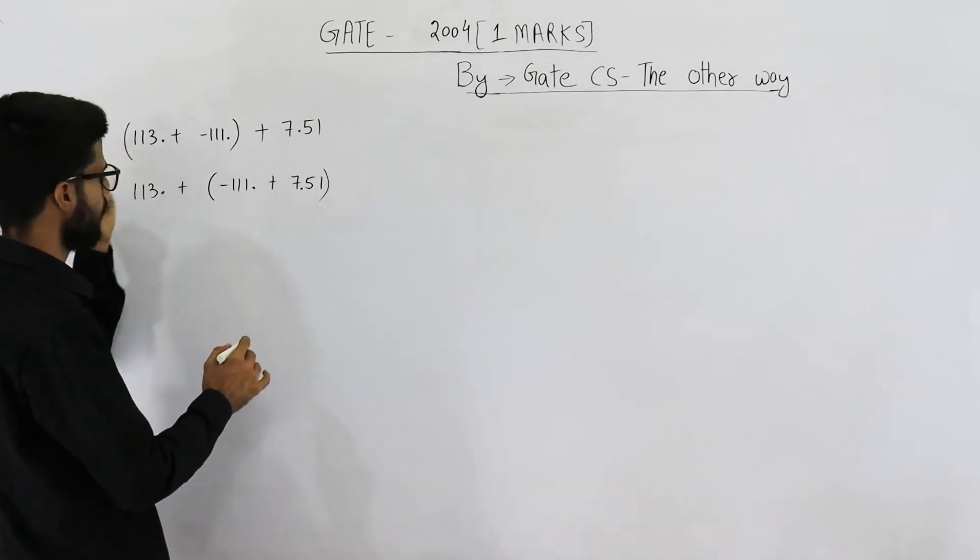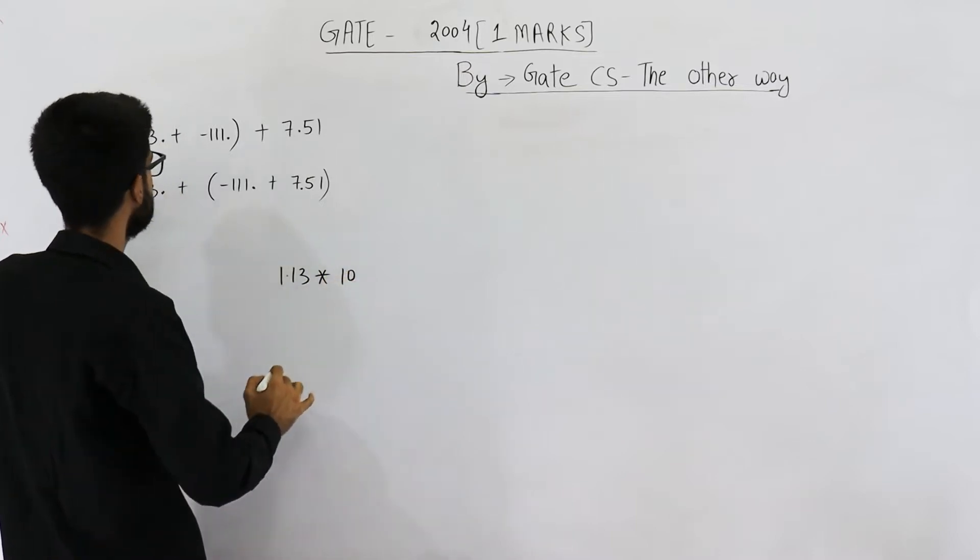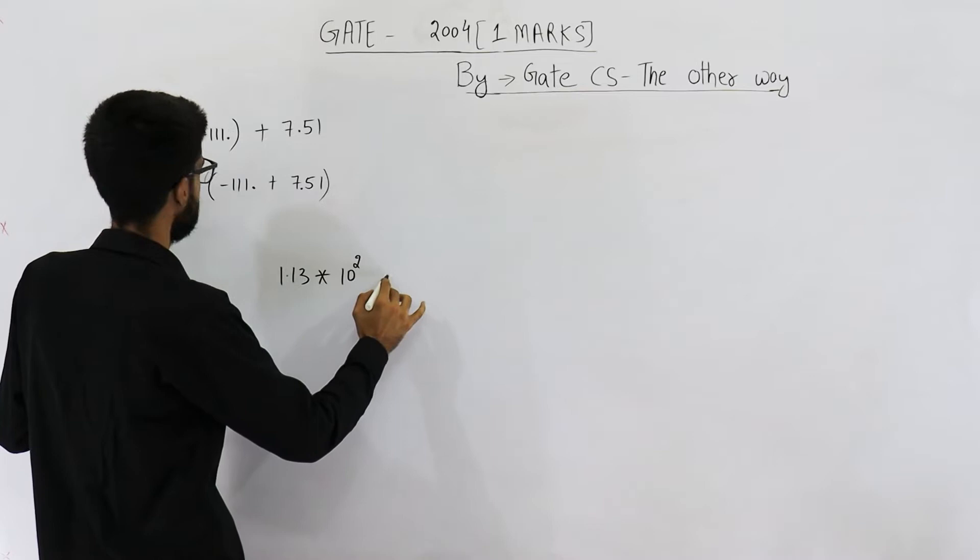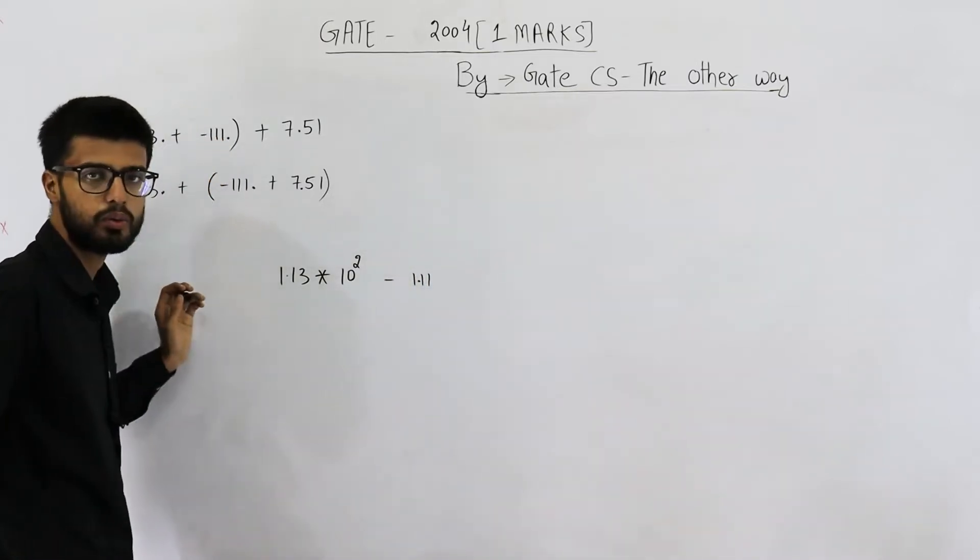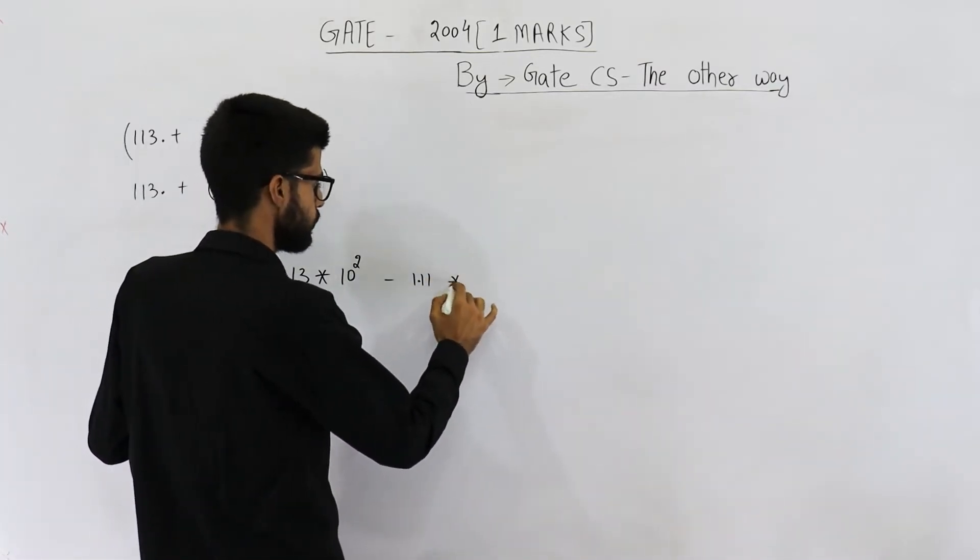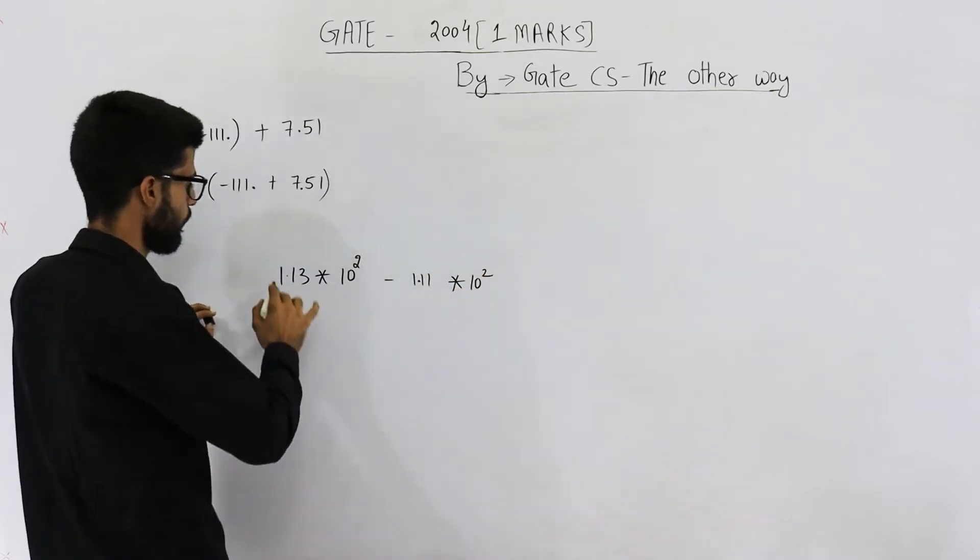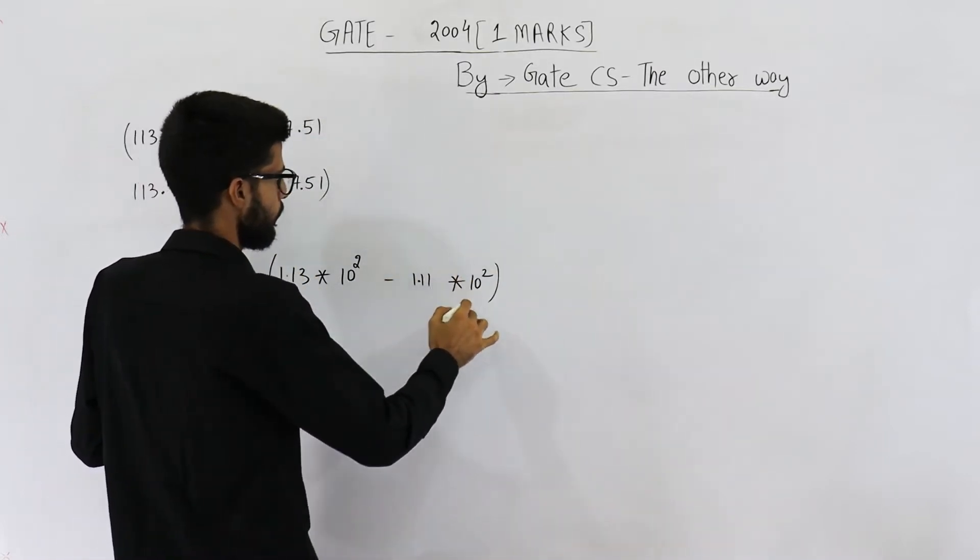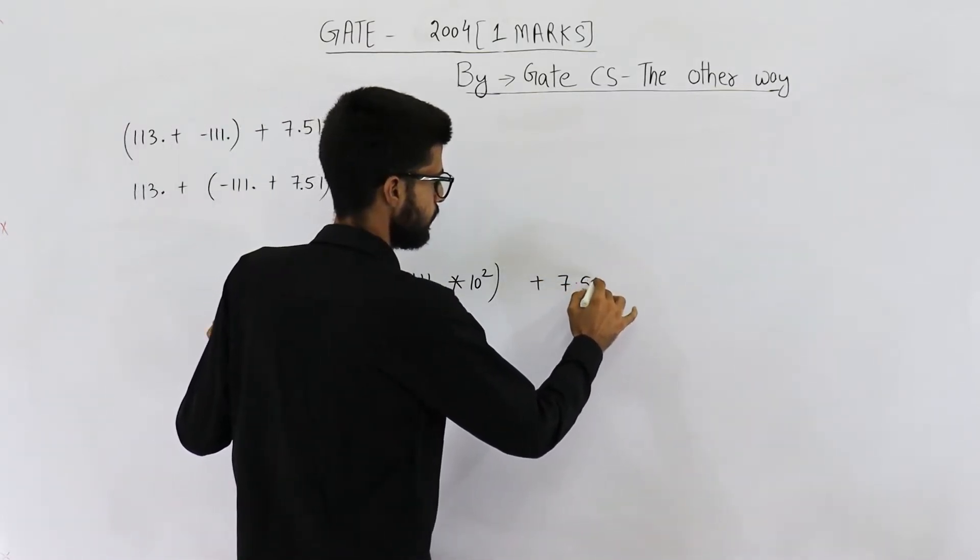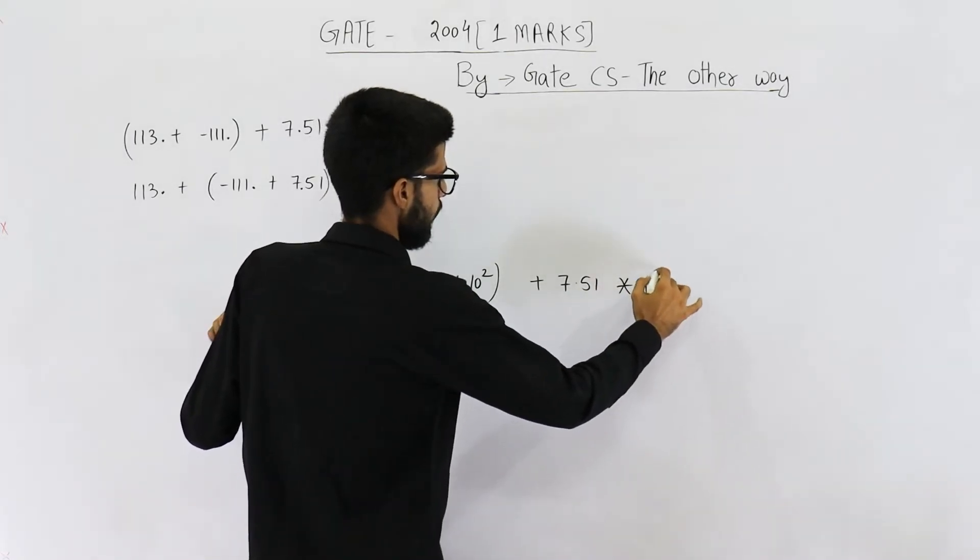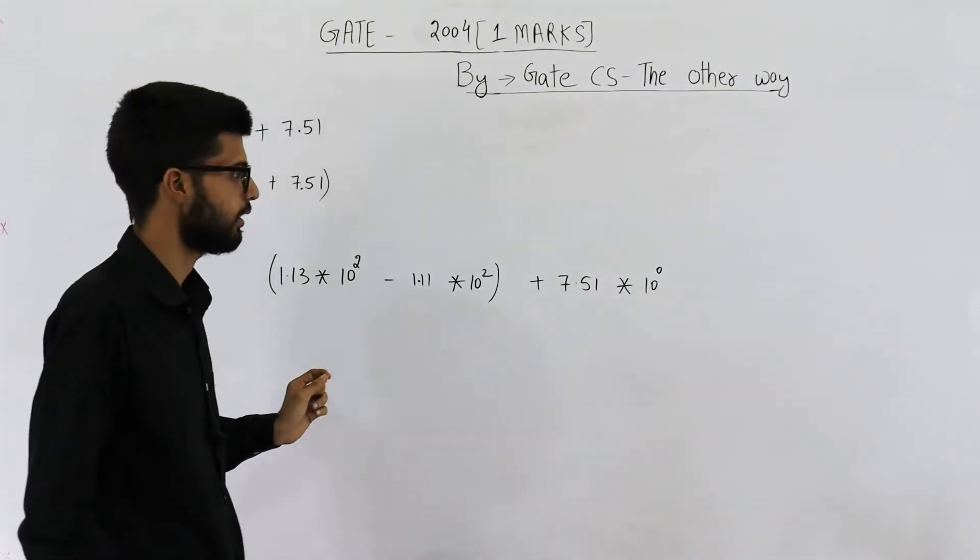So 1.13, if you normalize it, you are going to get this. Minus 111 will become 1.11 × 10² plus 7.5 will be left as it is, and the exponent will become zero. This is the standard method of representing numbers.